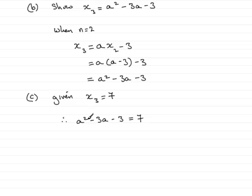This is a quadratic equation in a, because it's got a squared term, and like all quadratic equations, we would need to make it equal 0. So I'm going to subtract 7 from both sides, so a squared minus 3a minus 10 equals 0.